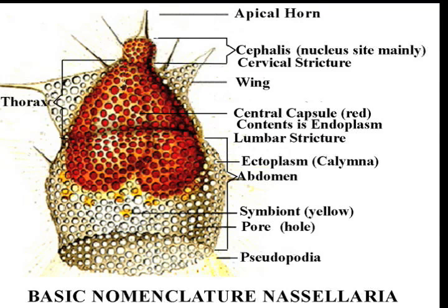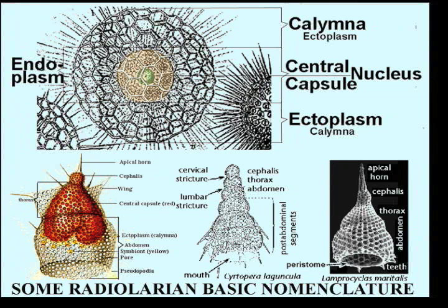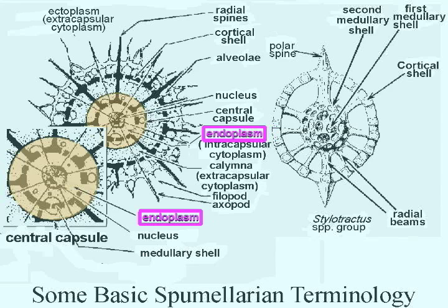In the Nassellaria, the shell is bell- or cone-shaped, with its divisions aligned along an axis. These next slides point out some of the names given the organic constituents of these protists and their location in the test.